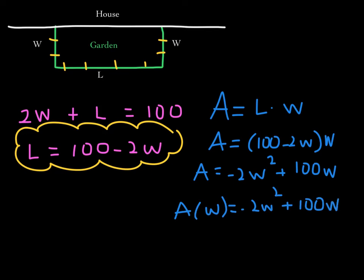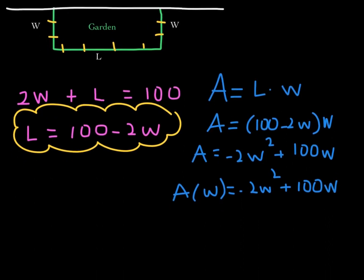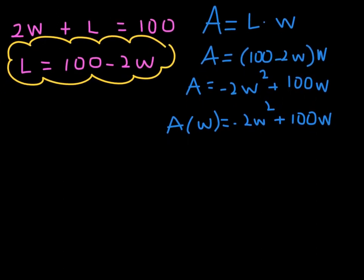This is a quadratic function whose leading coefficient is negative, which means it's a parabola opening downward. To maximize the area, the maximum occurs at the vertex. If you find the coordinates of the vertex, you've answered the question. In this context, the vertex has coordinates w comma A of w.